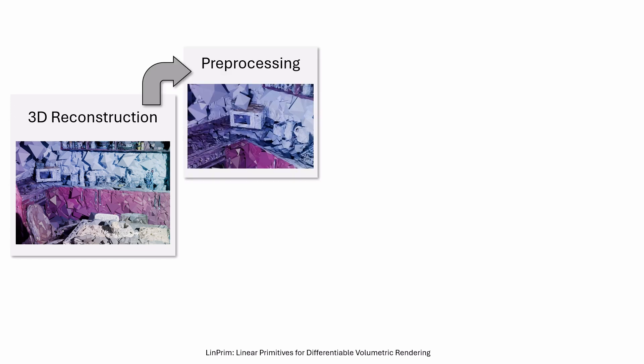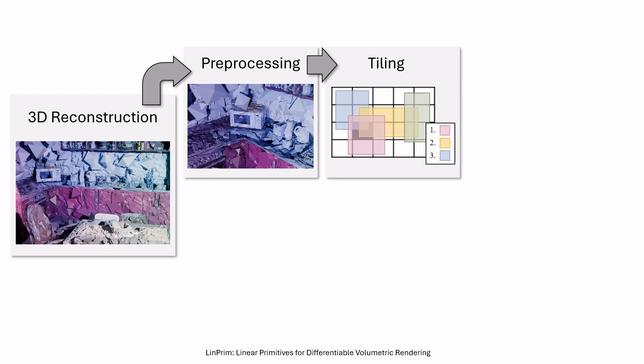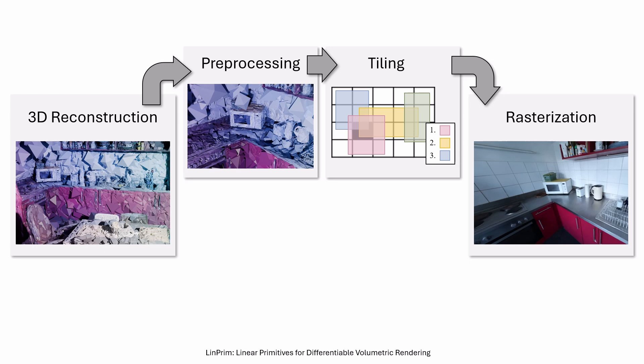During rendering, we first compute each primitive's visibility and color for the current camera pose, then build per-tile front-to-back sorted lists using exact bounding boxes. These lists let us efficiently compute closed-form intersections between pixel rays and primitive faces during rasterization. Each primitive's color contribution depends on its density and the intersection's segment length, and is finely merged using alpha blending.